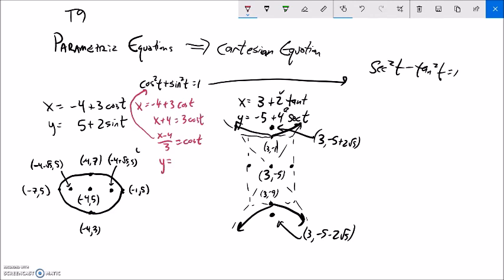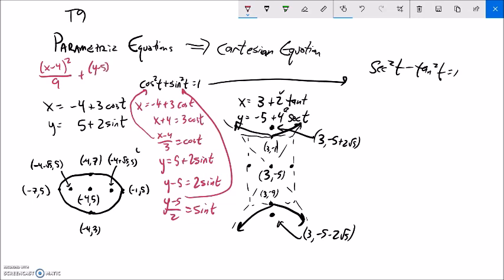Same thing with sine. I'm going to take my y value and solve for sine. So I could subtract 5 from both sides. Divide by 2. And if y minus 5 over 2 is sine, I can plug that into there. So here's what I get. Cosine squared would be x minus 4 squared over the 3 squared as well. So over 9 plus sine squared. Sine is this. So that would be y minus 5 squared over the 2 squared as well. 4 equals 1. You can see that there's a sketch of it right there.